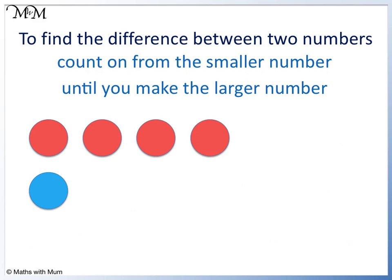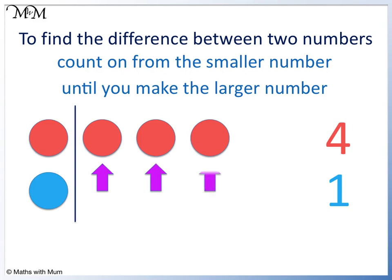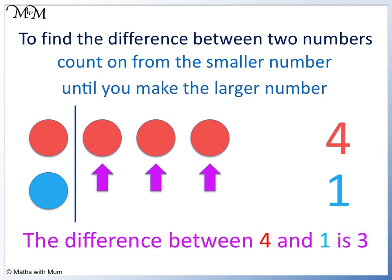Here we have 4 and 1. To find the difference, we count on from the smaller number. We have 1 2 3. The difference between 4 and 1 is 3.